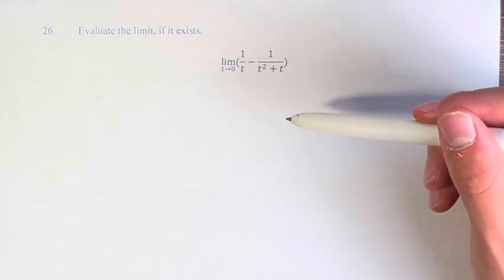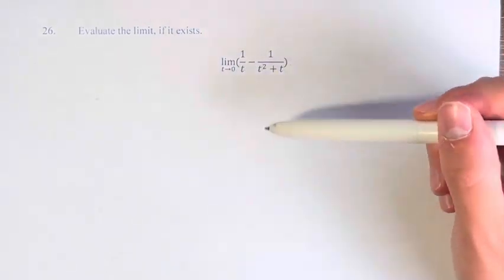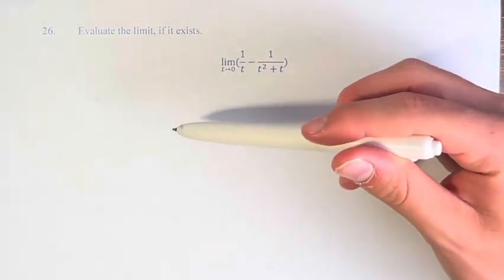What we have to do here is combine these fractions and simplify so that we're not dividing by t anywhere and creating a 0 in the denominator.